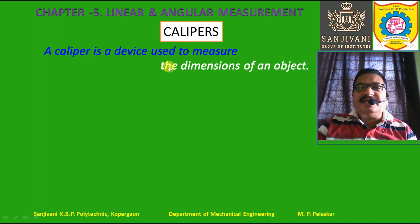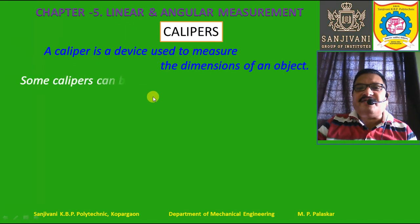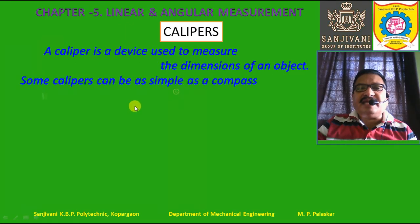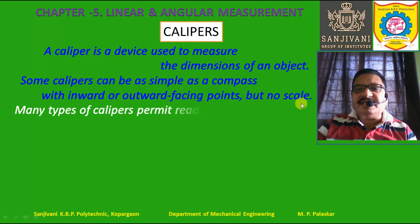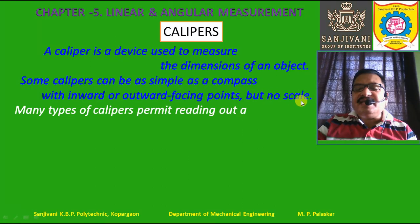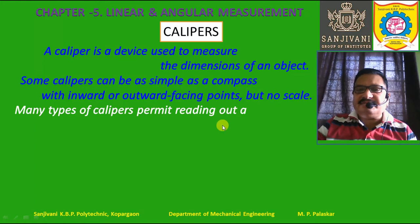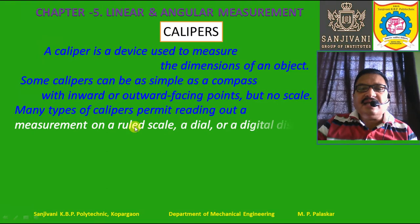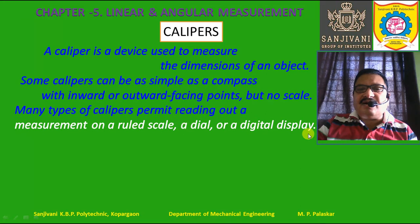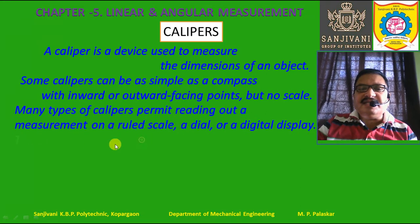A caliper is a device used to measure the dimensions of an object. Some calipers can be as simple as a compass with inward or outward facing points but no scale. Many types of calipers permit reading a measurement on a rule scale, a dial, or a digital display.